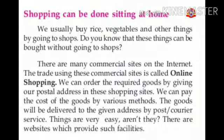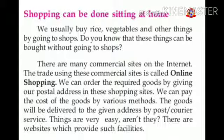Next topic: Shopping can be done sitting at home. We usually buy rice, vegetables and other things by going to shops. Do you know that these things can be bought without going to shops? There are many commercial sites on the internet. The trade using these commercial sites is called online shopping. We can order the required goods by giving our postal address in these shopping sites. We can pay the cost of the goods by various methods. The goods will be delivered to the given address by post or courier service.